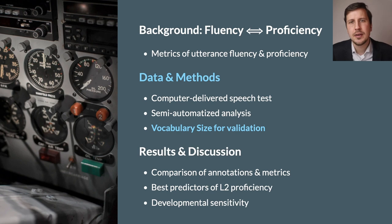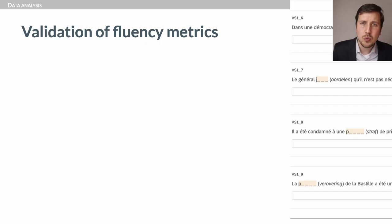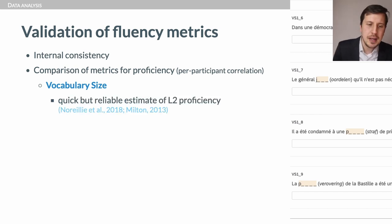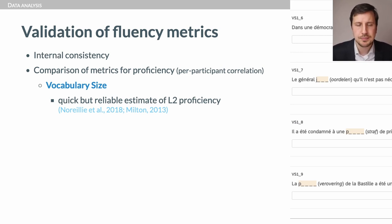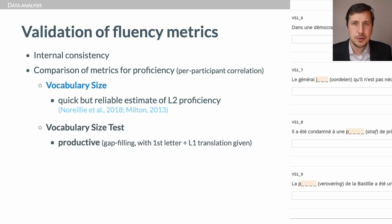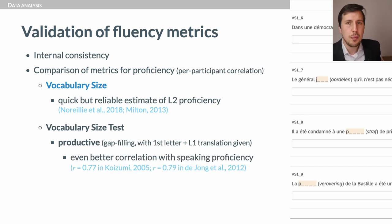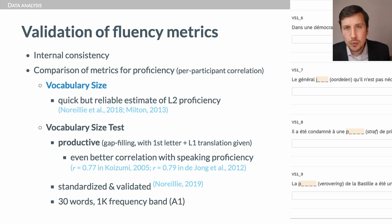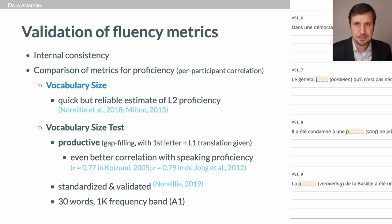For validation, we used the vocabulary size test as an external proxy of L2 proficiency. Vocabulary size has been demonstrated in many studies to be a quick but very reliable estimate of L2 proficiency. Productive tests have shown even better correlations with speaking proficiency, close to 0.8. The test we used was a standardized test designed and validated by our colleague Anne-Sophie Norey, used in previous vocabulary studies. It included 30 words from the first 1,000 frequency band — roughly what can be expected at an A1 level.